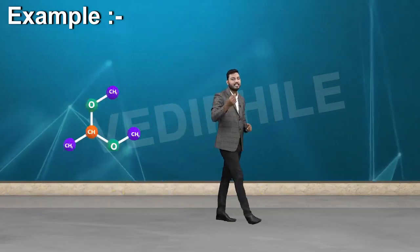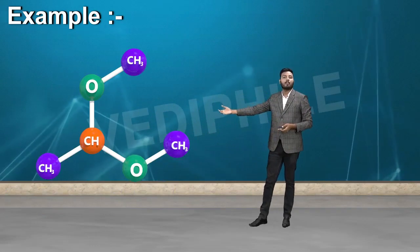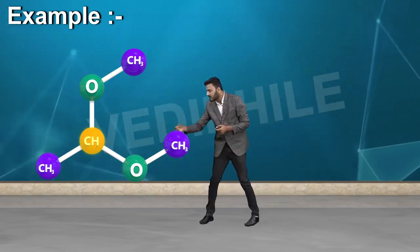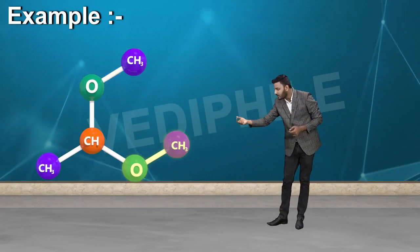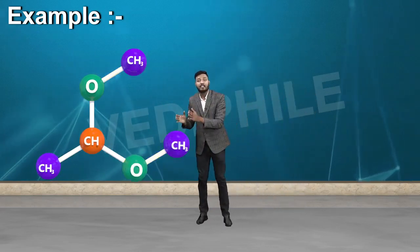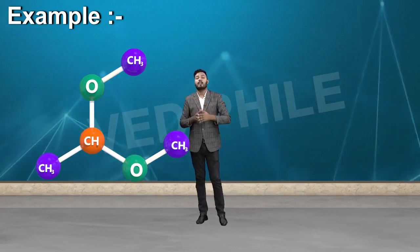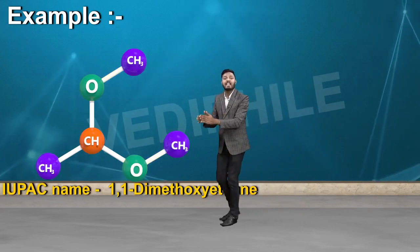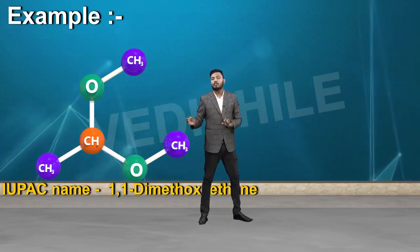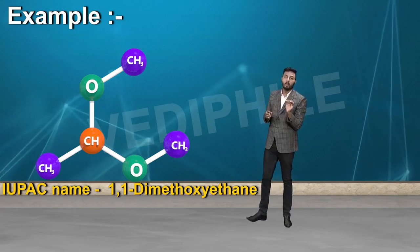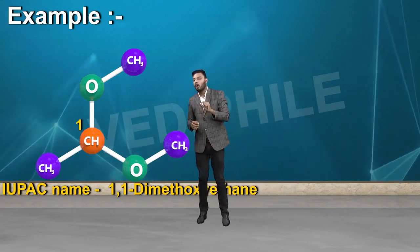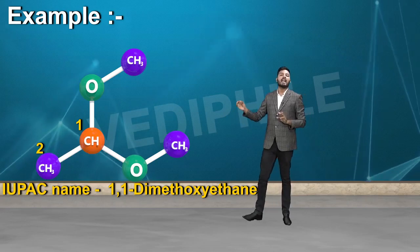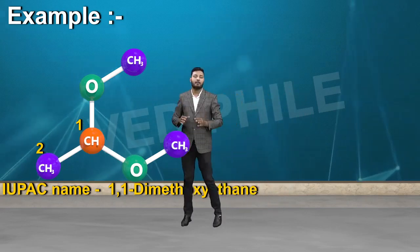एक और example देखते हैं — केवल IUPAC name लिखना है। CH3-CH with two OCH3 groups attached। यहाँ दो ether groups हैं — OCS3 और OCS3 दोनों एक ही carbon से जुड़े हैं। जिस carbon से दोनों OCH3 जुड़े हैं उसे number 1 और दूसरे को number 2 देंगे। IUPAC name होगा 1,1-dimethoxyethene।